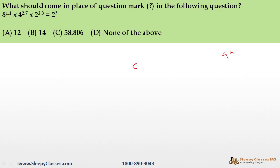The question: 8 raised to the power 1.1 × 4 raised to the power 2.7 × 2 raised to the power 3.3 equals 2 raised to the power of question mark. We need to find the missing power. The strategy is to convert all bases to base 2, since 8 = 2³ and 4 = 2².